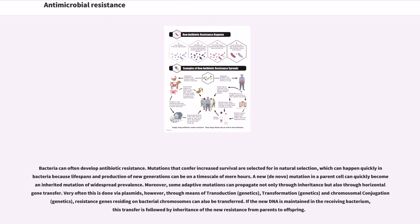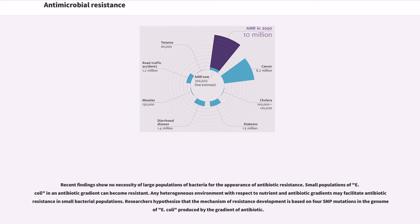Bacteria can often develop antibiotic resistance. Mutations that confer increased survival are selected for by natural selection, which can happen quickly in bacteria because lifespans and production of new generations can be on a time scale of mere hours. A new, de novo, mutation in a parent cell can quickly become an inherited mutation of widespread prevalence. Moreover, some adaptive mutations can propagate not only through inheritance but also through horizontal gene transfer. Very often this is done via plasmids, however through means of transduction, transformation, and chromosomal conjugation, resistance genes residing on bacterial chromosomes can also be transferred. If the new DNA is maintained in the receiving bacterium, this transfer is followed by inheritance of the new resistance from parents to offspring.